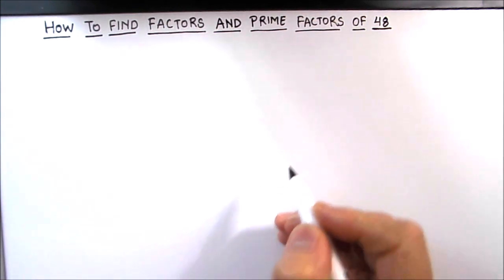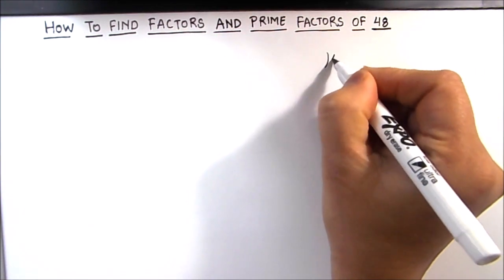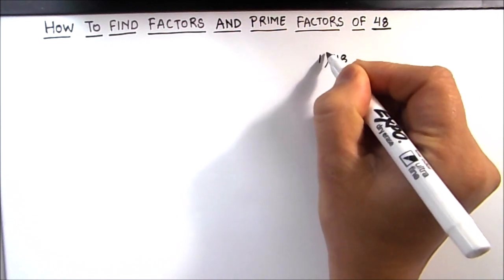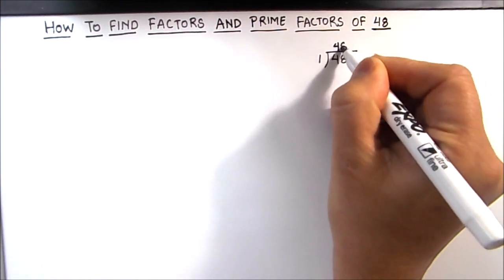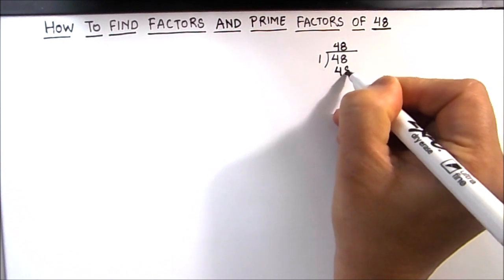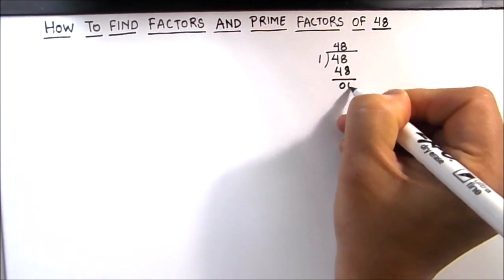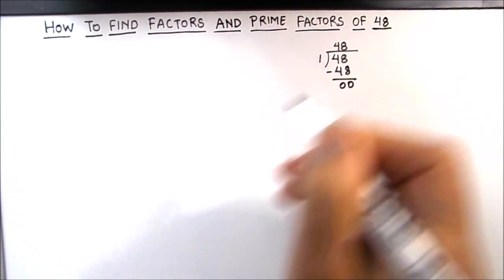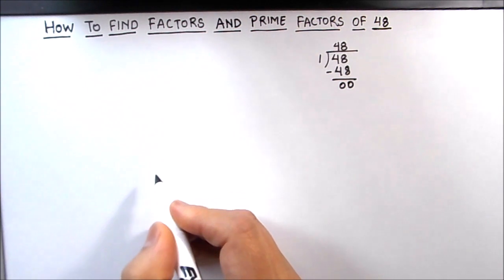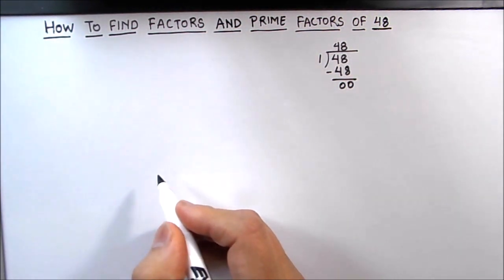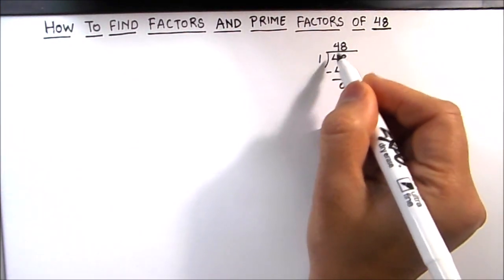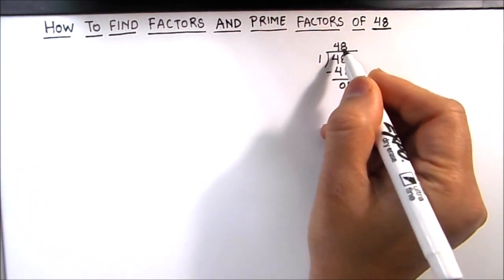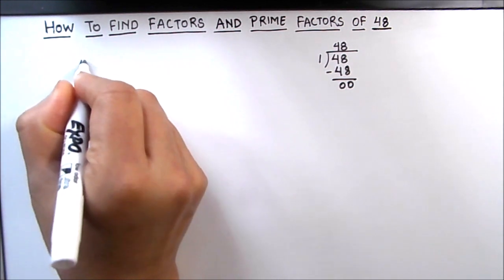So let's start dividing 48. First we divide 48 by number 1. 1 times 48 is 48, and we get 0 remainder. Hence 1 is a factor of 48 — and in fact 1 is a factor of all numbers. So we got two factors from this division: 1 and 48.